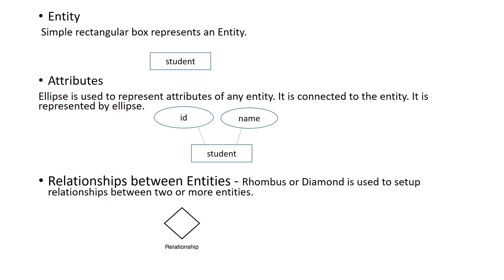Next is Attribute. Attribute is a property. We use attributes to describe the entity — for example, student has properties like name, ID, address. Attributes are connected to the entity. We represent an attribute using an ellipse. So ID is in an ellipse, name is in an ellipse, address is in an ellipse — these elements represent the entity. Entity is a rectangle; attributes are ellipses.